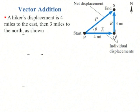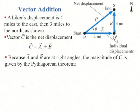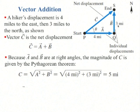An example of vector addition: if we have a hiker who first walks 4 miles east and then 4 miles north, the net displacement is the sum of these two vectors. Since these happen to be at right angles, you can use the Pythagorean theorem to find that the magnitude of c is 5 miles.